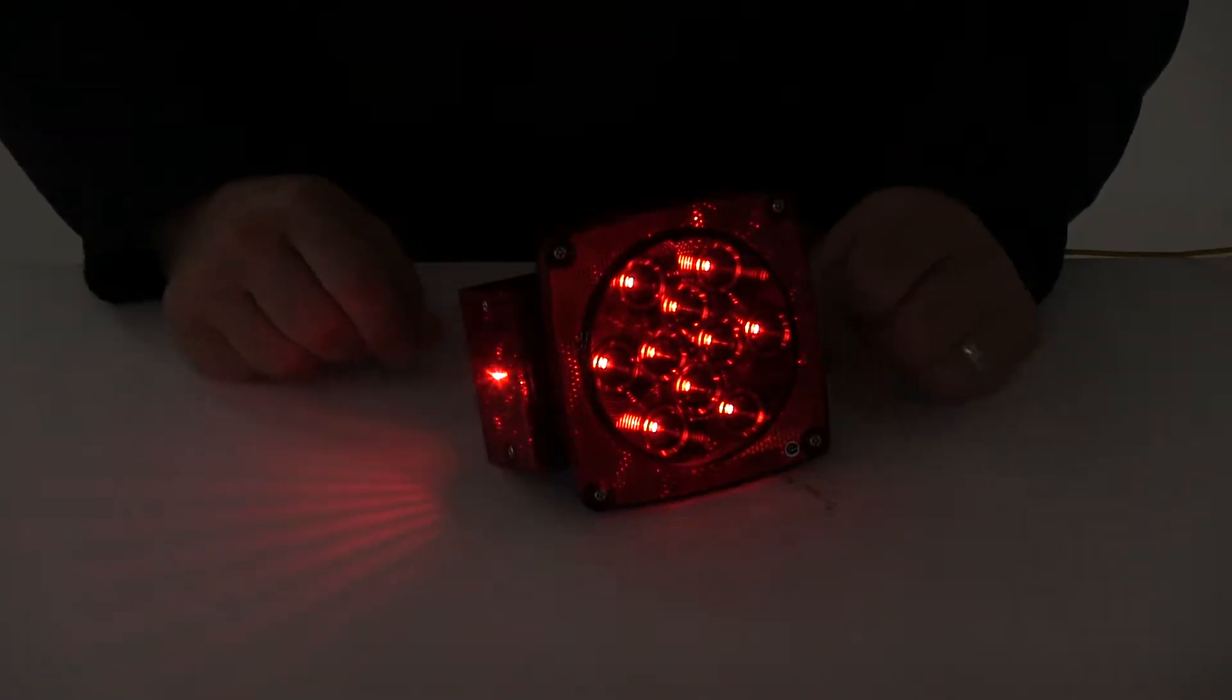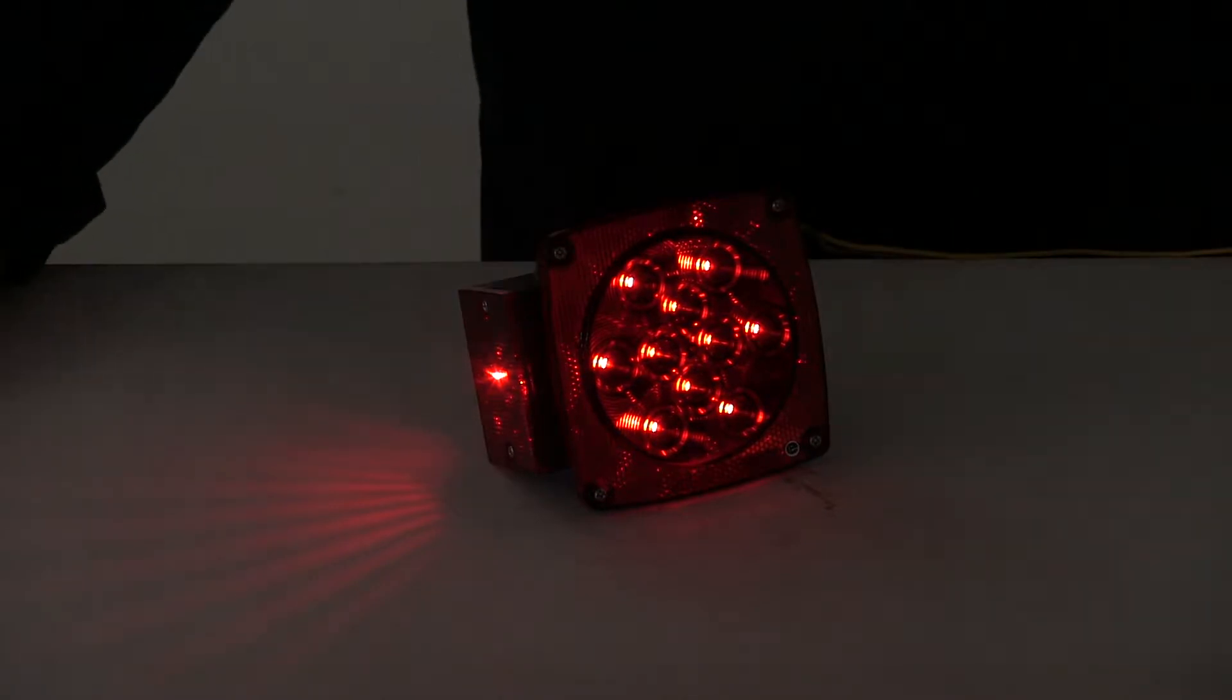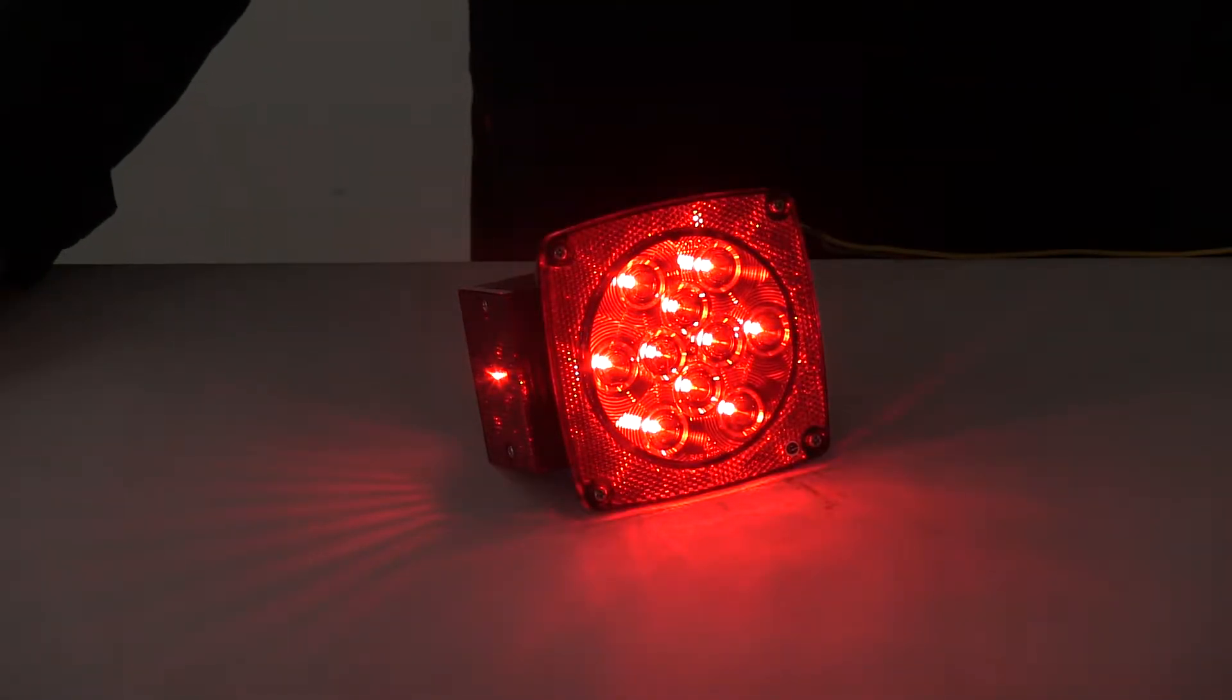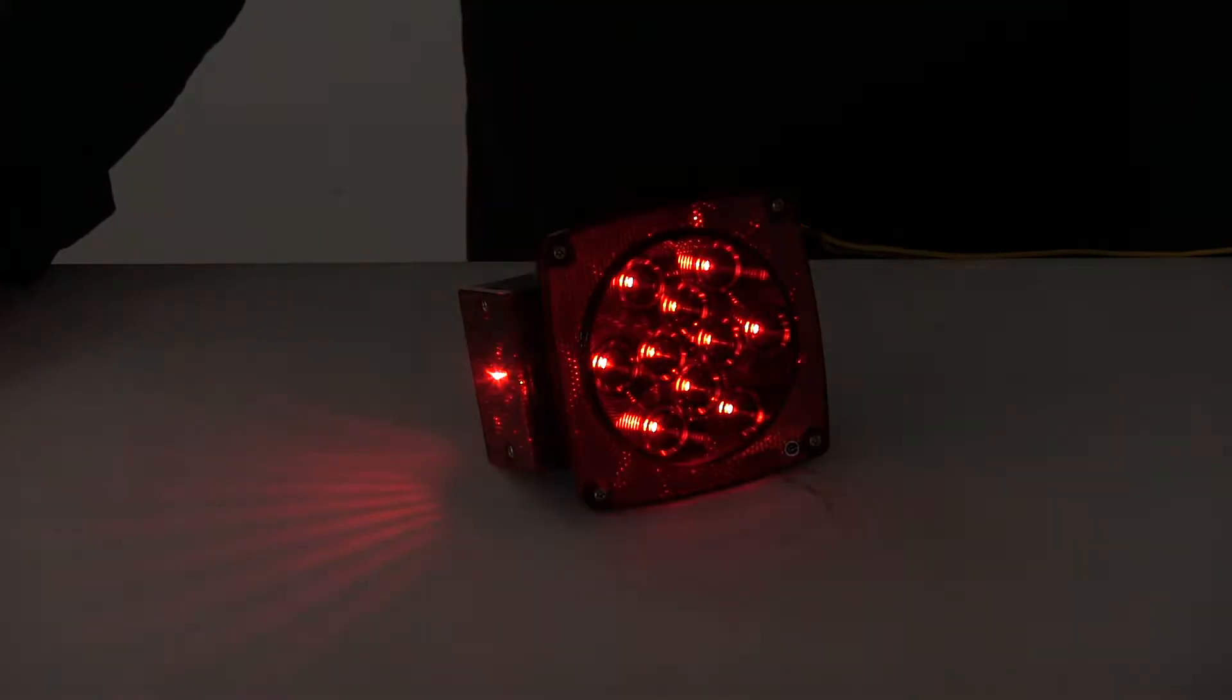This is the running light or taillight function of the unit. When we apply the brakes, you can see how the signal output increases and it does that as well when we apply our turn signals.